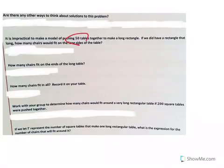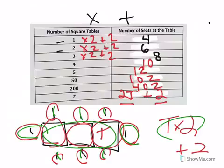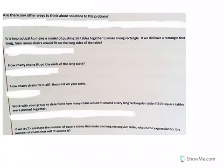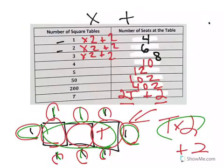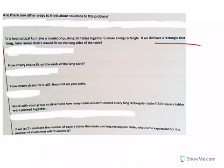It is impractical to make a model of pushing 50 tables together. So when we did three tables like this, you can just draw that out. But if someone wanted 50 tables put together, it'd be really difficult to draw that, and that's time consuming. So if we did have a rectangle that long, how many would fit? Well, we've already figured that out, right? Fifty times two, plus two, would be one hundred two.